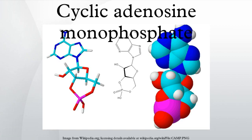Role of cAMP in bacteria. In bacteria, the level of cAMP varies depending on the medium used for growth. In particular, cAMP is low when glucose is the carbon source. This occurs through inhibition of the cAMP-producing enzyme adenylate cyclase, as a side effect of glucose transport into the cell. The transcription factor cAMP receptor protein, also called CAP, forms a complex with cAMP and thereby is activated to bind to DNA. CRP-cAMP increases expression of a large number of genes, including some encoding enzymes that can supply energy independent of glucose.